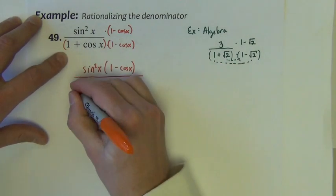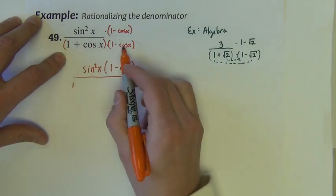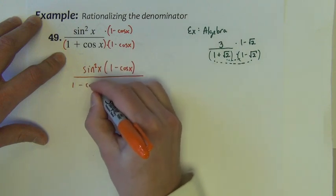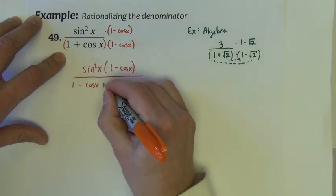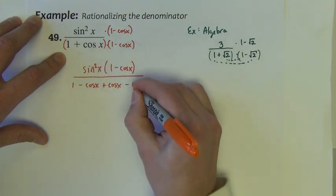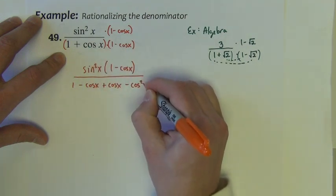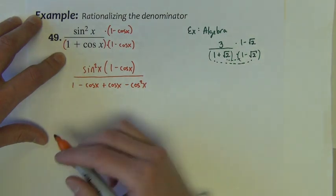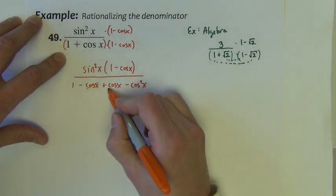1 times 1 is 1. 1 times negative cosine is negative cosine. Cosine times 1 is positive cosine. Cosine times negative cosine is negative cosine squared.